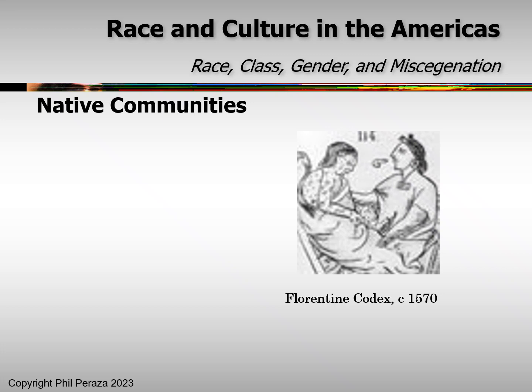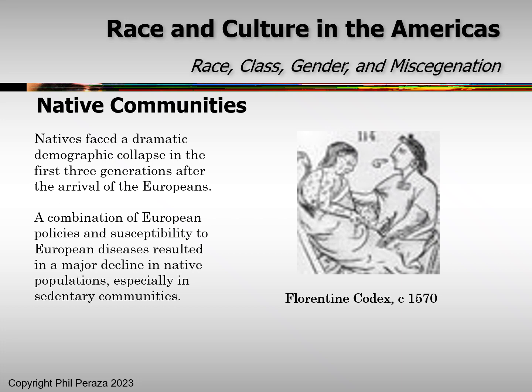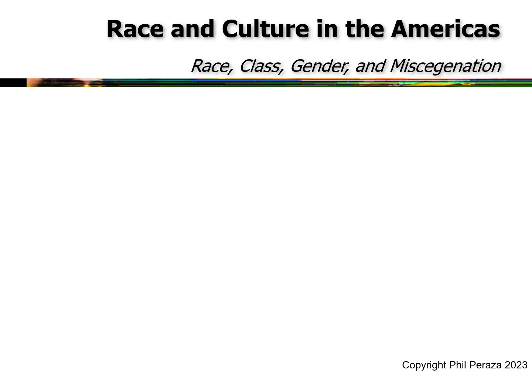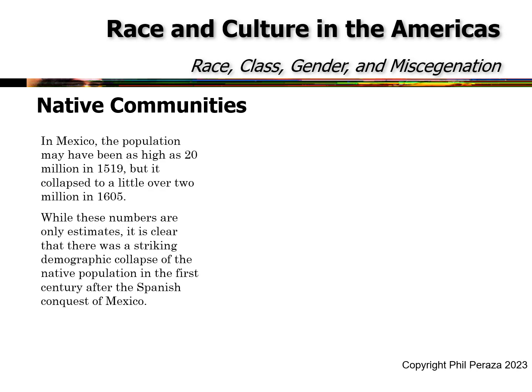How did Native communities survive? Natives faced a dramatic demographic collapse in the first three generations after the arrival of the Europeans. A combination of European policies and susceptibility to European diseases resulted in a major decline in Native populations, especially in sedentary communities. In Mexico, the population may have been as high as 20 million in 1519, but it collapsed to a little over 2 million in 1605. While these numbers are only estimates, it is clear that there was a striking demographic collapse of the Native population in the first century after the Spanish conquest of Mexico.